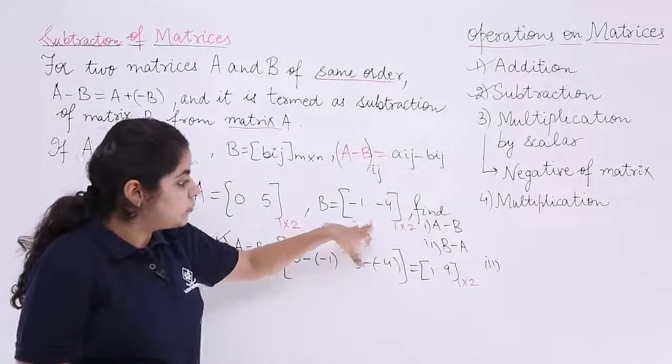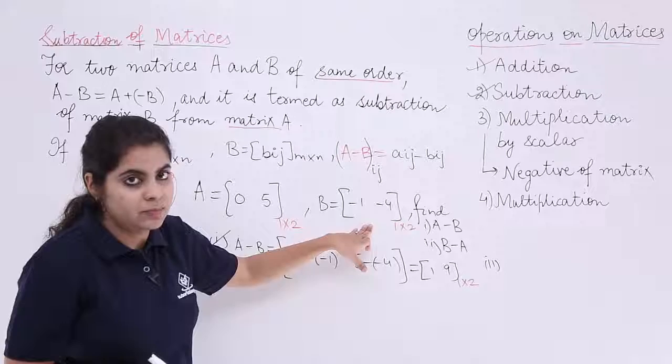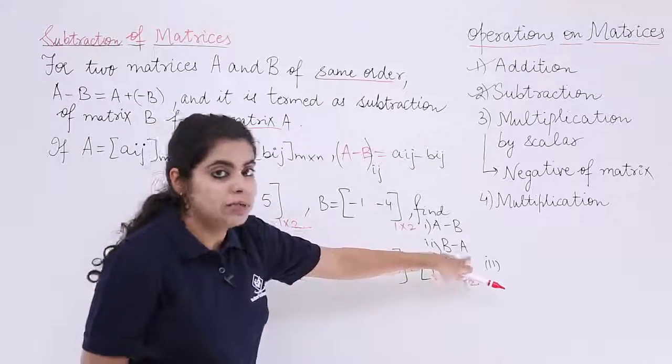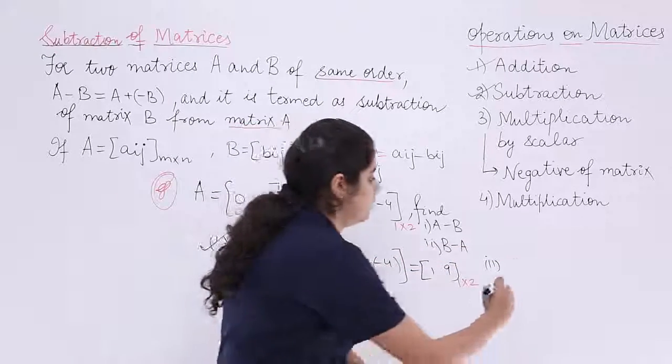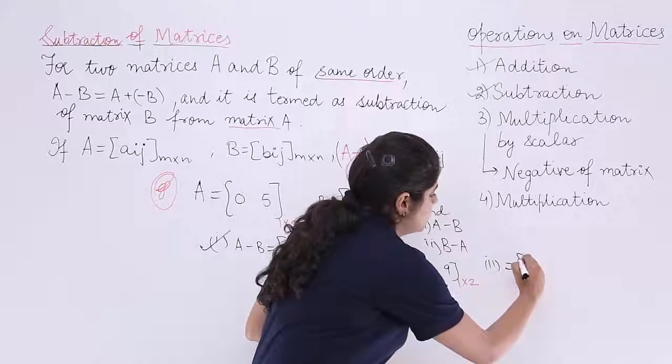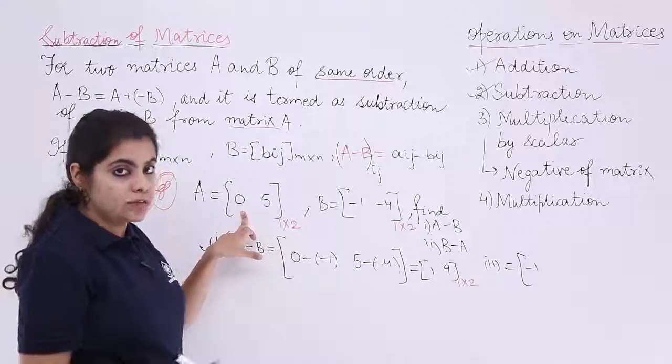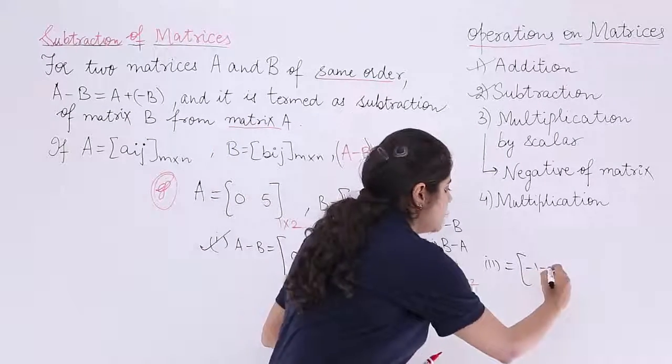That means we will write first the B matrix and then we will write A matrix. So first write B matrix because it is B minus A. Writing B, the first element is minus 1. B minus A, minus of 0. So it is minus of 0.